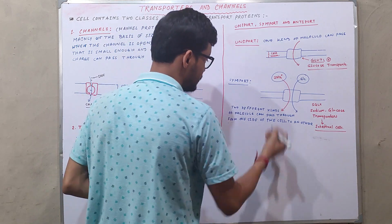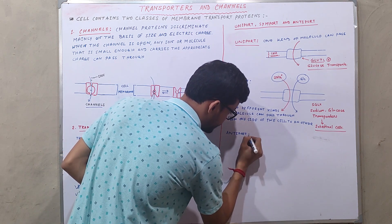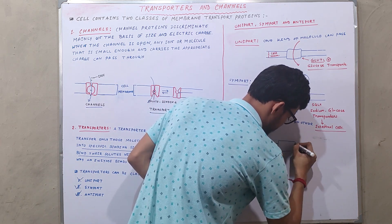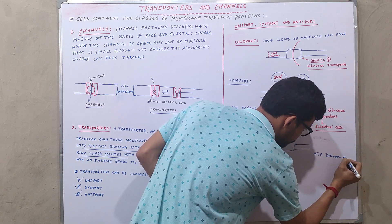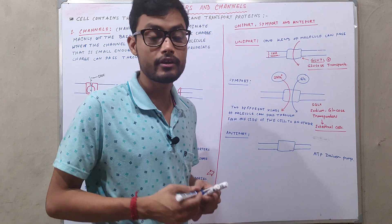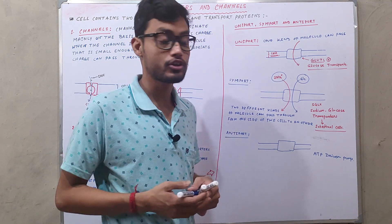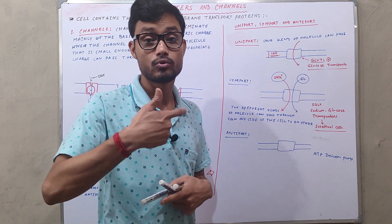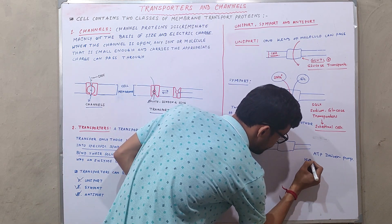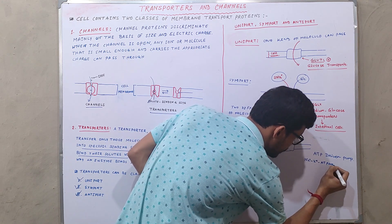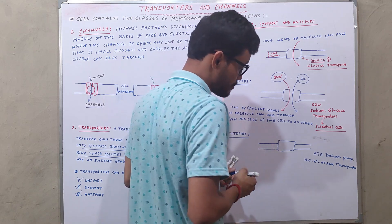The third important type of transporter protein is antiport. Antiport transporters are ATP-driven pumps. In antiport, one molecule is transferred from outside of the cell and another molecule is transferred inside the cell, meaning two different molecules pass in opposite directions across the cell membrane. A good example is the sodium-potassium ATPase transporter.